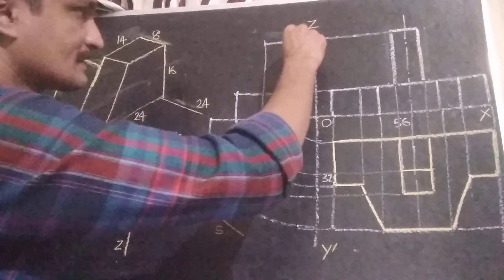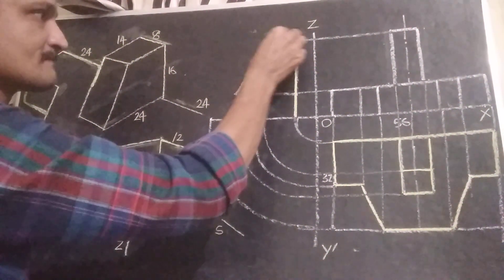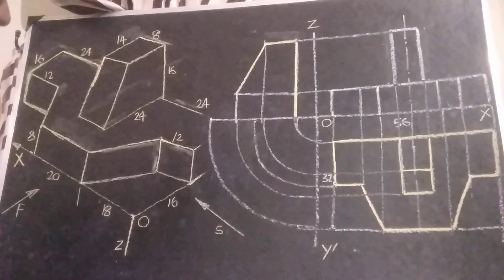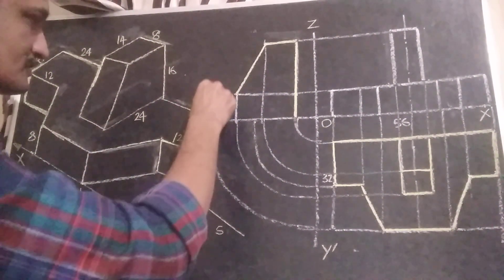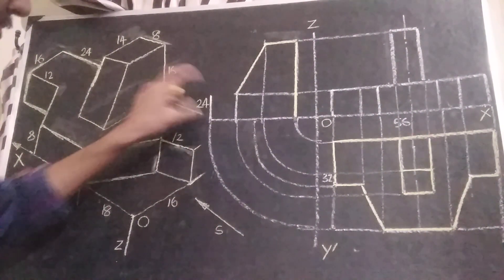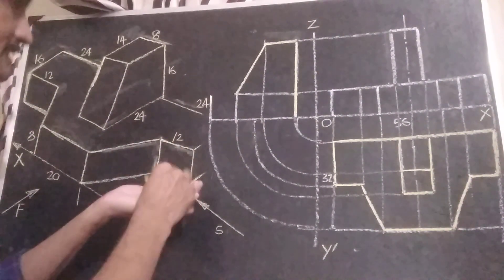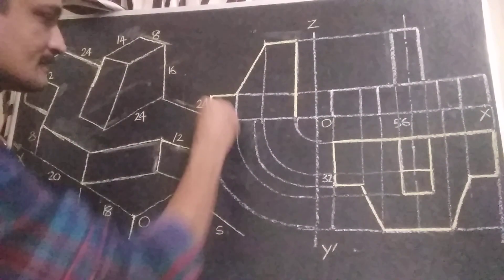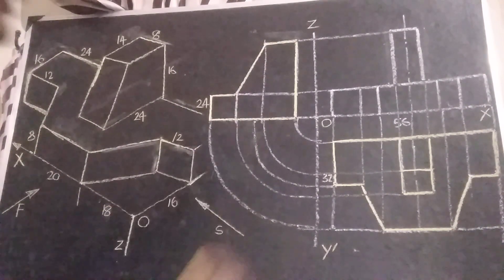We can connect these two points and complete that edge. This height is equal to 8 mm; again this height is equal to 8 mm. Then we can connect this line also and complete the right side view of the object.